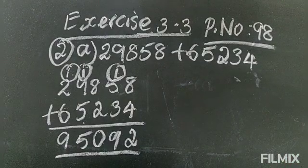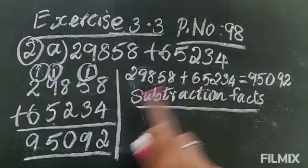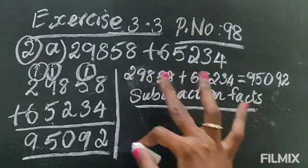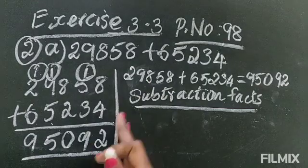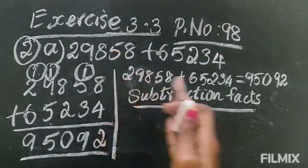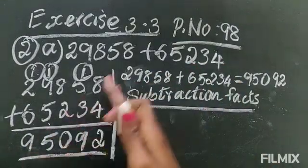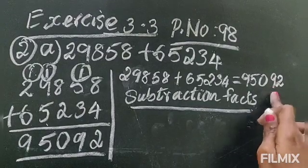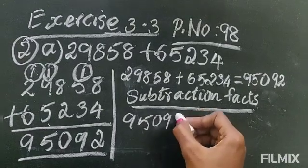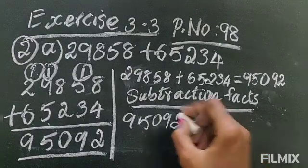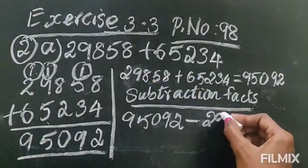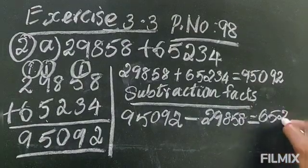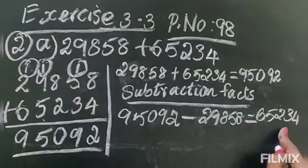So let's write the subtraction fact now. We added these two numbers and the answer is 95,092. Now we are going to write the subtraction fact. To write the subtraction fact, after the equal sign what number is there — that is the bigger number, so write that first: 95,092. From there minus the first addend 29,858. The answer will be surely the second addend. You don't need to do any calculation — just look at that and write. So the second addend will be the answer.